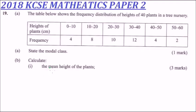This is the 2018 KCSE Mathematics Paper 2, on the topic of statistics. We are told the table below shows the frequency distribution of heights of 40 plants in a tree nursery. The height ranges from 0 to 10 with frequency 4, up to 50 to 60 with frequency 2.